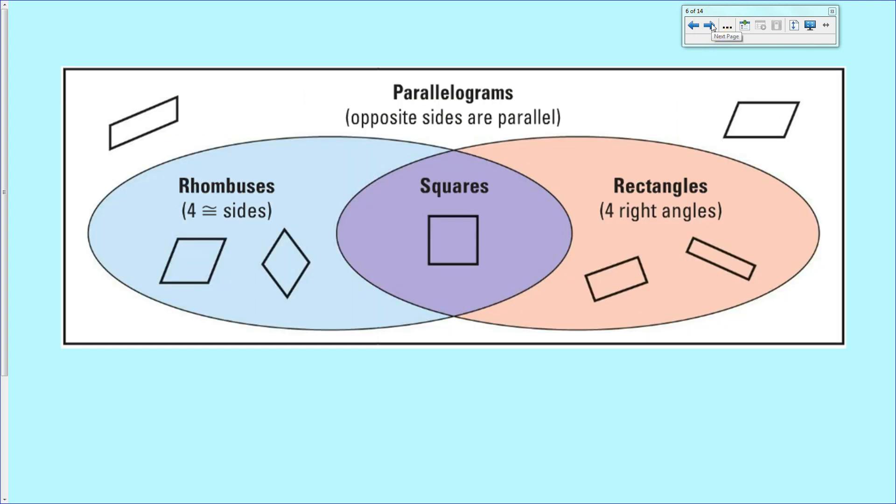Here's a cool Venn diagram of how a whole bunch of quadrilaterals fit together. Notice that squares are in the sweet spot right in the middle. They are all types of those types of quadrilaterals that we've talked about so far.